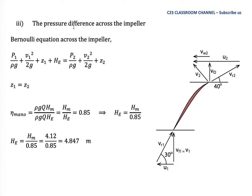For the third part, we calculate the pressure difference across the impeller — that is, the pressure difference between inlet (point 1) and outlet (point 2) of the impeller. The outlet pressure is higher because it lifts water. We apply the Bernoulli equation: P1/(ρg) + V1²/(2g) + z1 + He = P2/(ρg) + V2²/(2g) + z2. We neglect the elevation difference z since it is negligible.